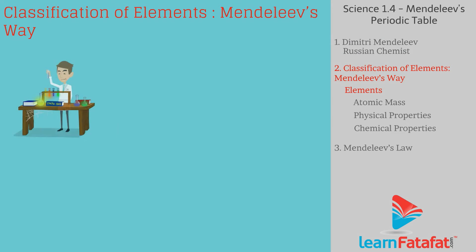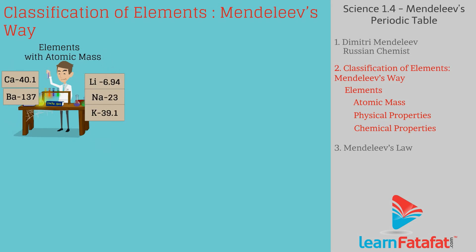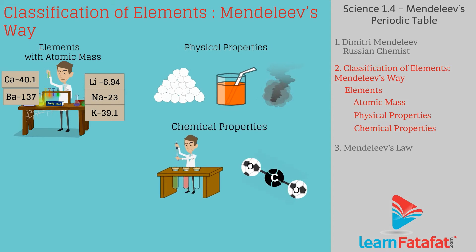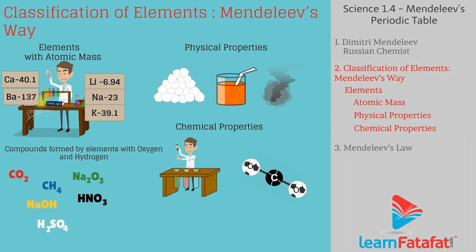Mendeleev started studying the elements in order to classify them. He compared elements based on their atomic masses, and also studied their physical and chemical properties. For studying chemical properties, he primarily considered the compounds formed by elements with oxygen and hydrogen, because these elements form compounds with most of the elements.